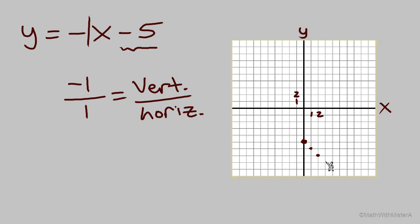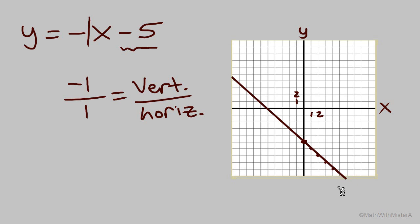We'll continue to find more points on the line, then connect those points with the line. And there's the graph of the equation: y equals negative x minus 5.